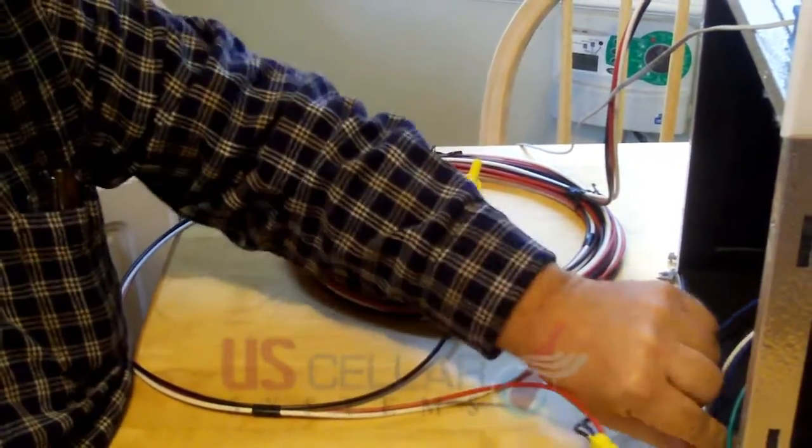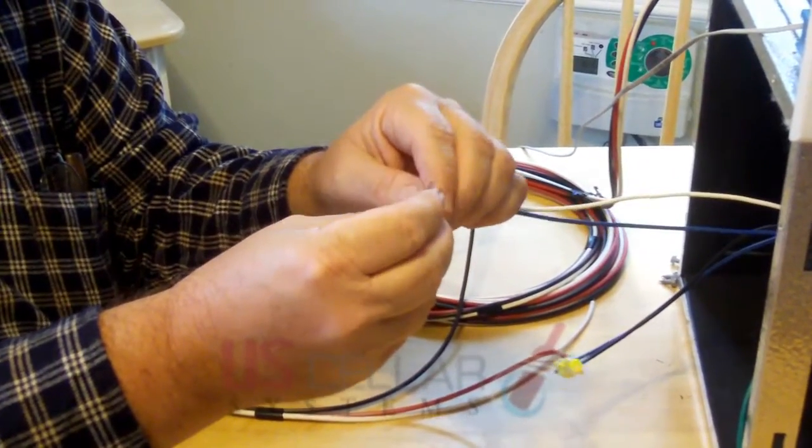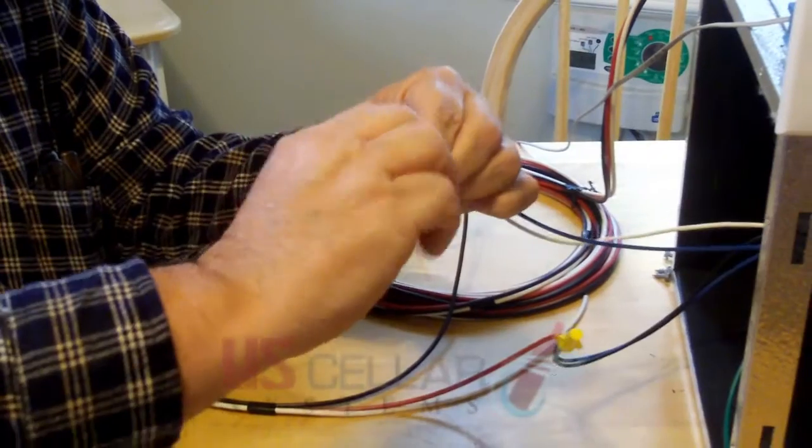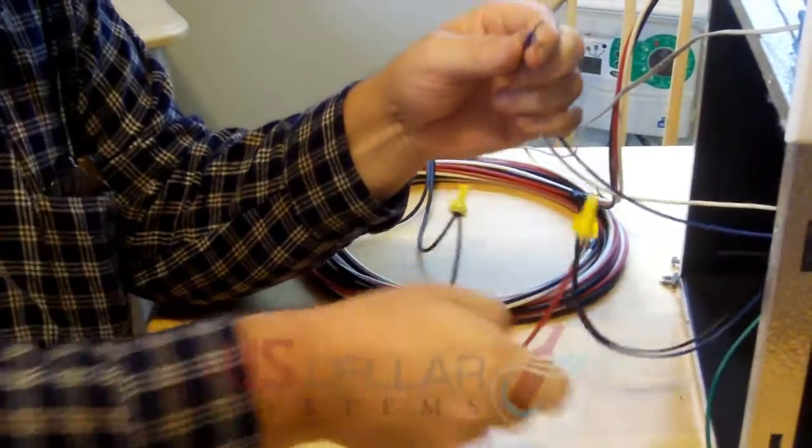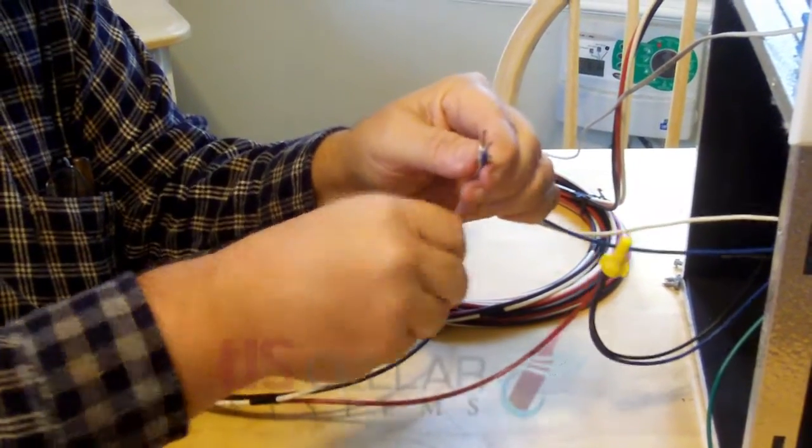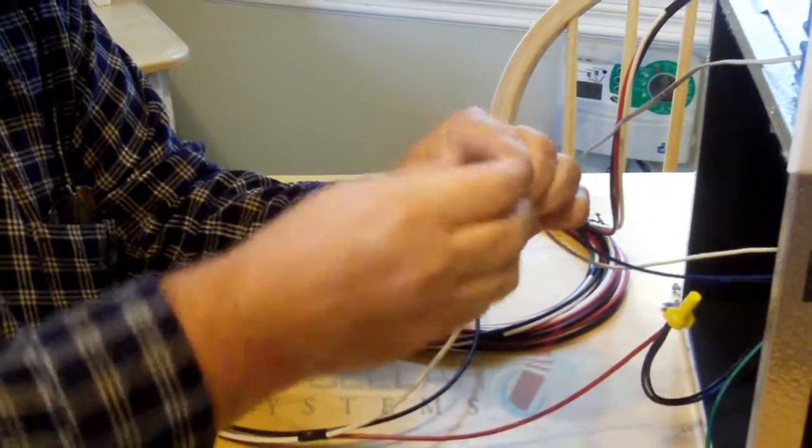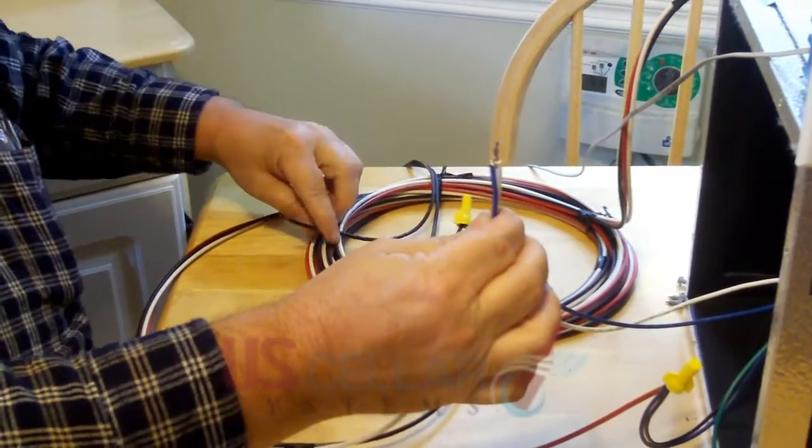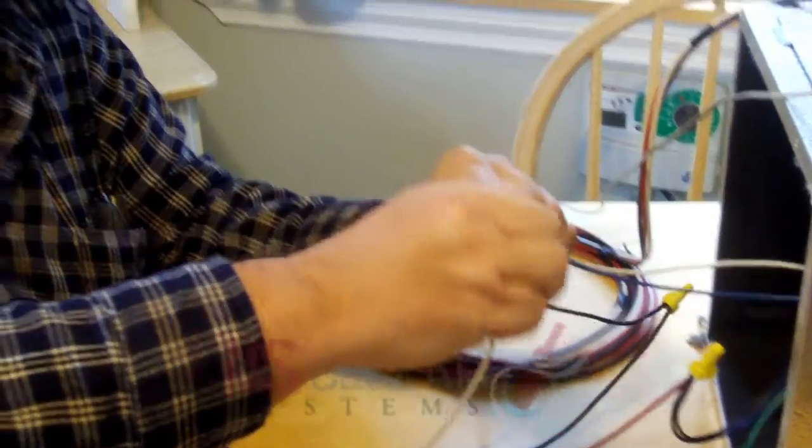Next, you have the white wire and the second blue wire. These will get wire nutted together or twisted together. Add to that the white wire from your wiring harness. And then to that, you will connect your neutral coming in from your power source. Wire nut those together.